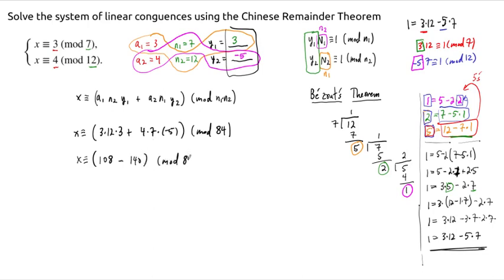35 times 4 is 140. This is all reduced mod 84. And so x is congruent to negative 32 mod 84. But if we want to get this to be a positive modulus, then x is congruent to 52. 84 minus 32 is 52, mod 84.